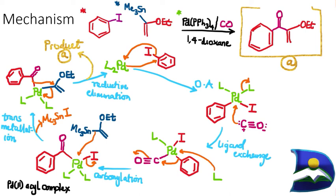That's it for this video — quite a long one. I hope you understood the connection between the Stille reaction and its application to carbonylation, where there are two forms: using an acid chloride or using a high concentration of carbon monoxide. Please leave a comment below, subscribe, stay smart, and always believe in yourselves.